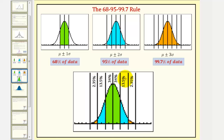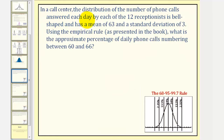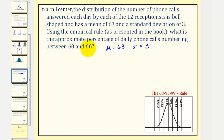And this is all because of the symmetry of the normal distribution. Let's take a look at some examples. In a call center, the distribution of the number of phone calls answered each day by each of the 12 receptionists is bell-shaped and has a mean of 63 and a standard deviation of 3. So we know mu equals 63 and sigma equals 3. Using the empirical rule, what is the approximate percentage of daily phone calls numbering between 60 and 66?